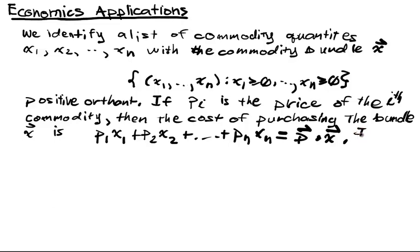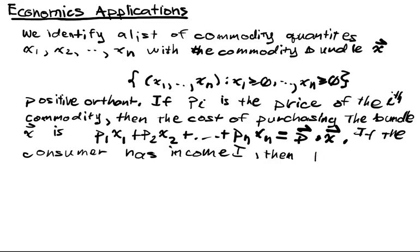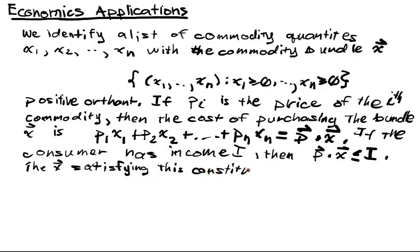Now, if the consumer has income I, then it has to be true that P dot x has to be less than or equal to I. So when this condition occurs, it's called the budget set. The x satisfying this inequality constitute the budget set.